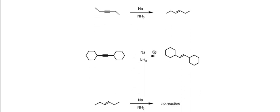This third example, again along the same lines, we've got a cyclohexane on either side and we treat it with sodium and ammonia and we end up with the trans alkene.